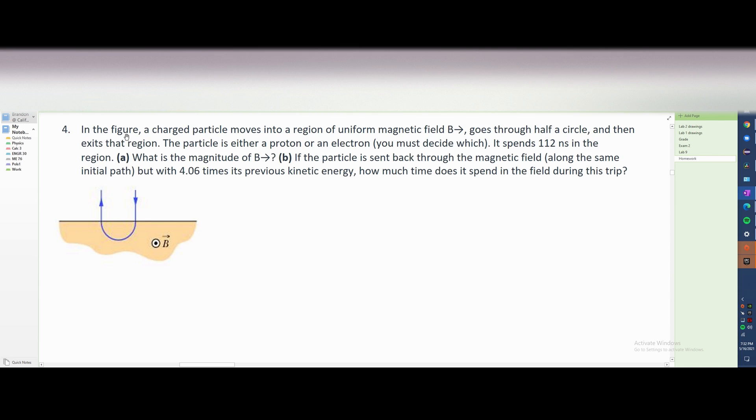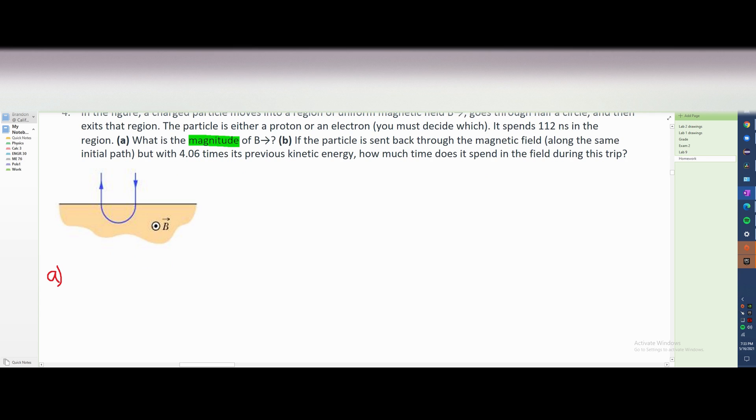For number four, in the figure, a charged particle moves into a region of uniform magnetic field B and it goes through half a circle, then exits that region. The particle is either a proton or an electron, you must decide. It spends 112 nanoseconds in the region. For part A, we're asked what is the magnitude of B? So we're looking for the magnitude in part A. Because our B is going out of the page, we are going to choose this to be a proton and we're going to be using protons for the mass and the charge when we measure it.